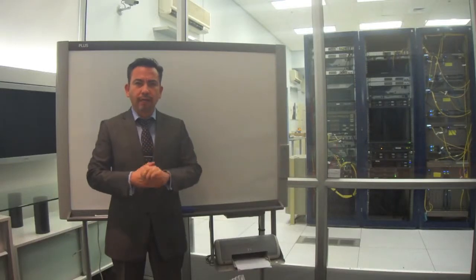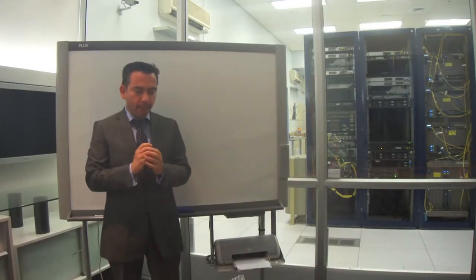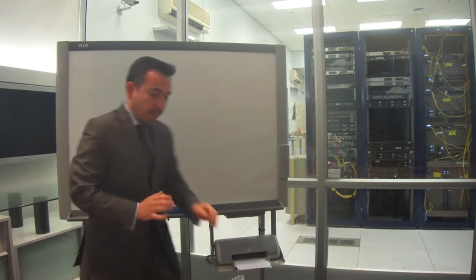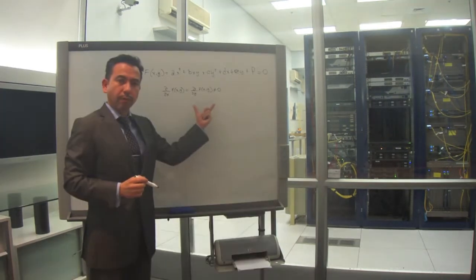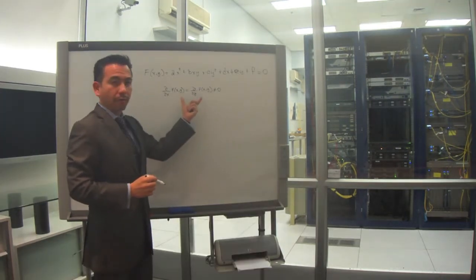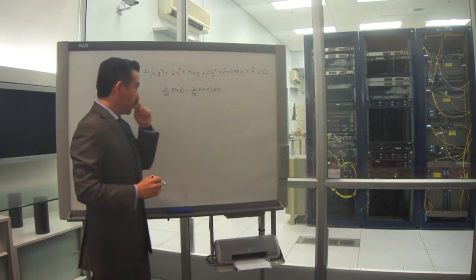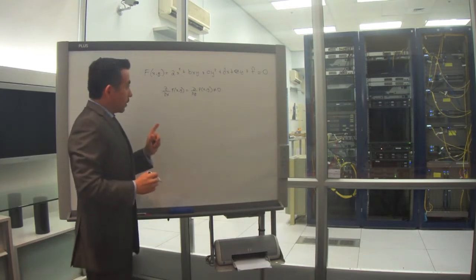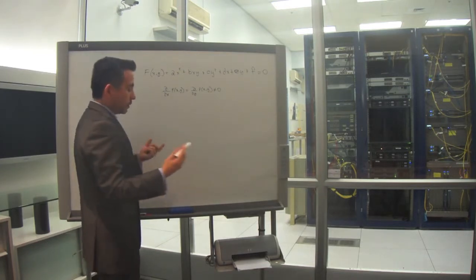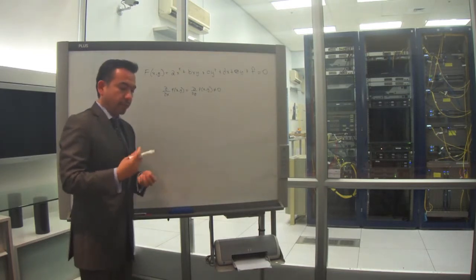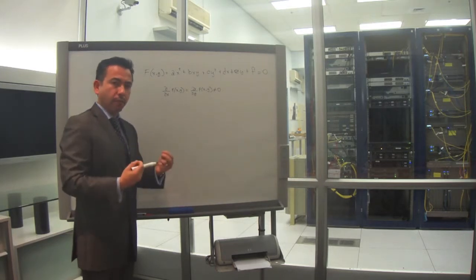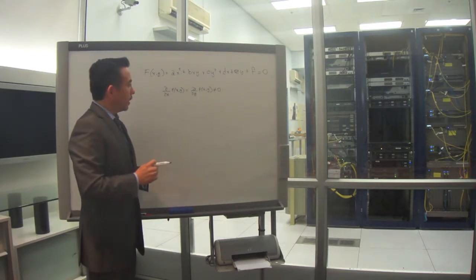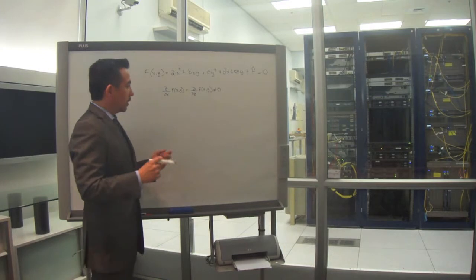We're going to prove the singularity of the elliptic curve. We have a singularity in the curve. What it means is: singularity means it's not differentiable, and that is not good for us.